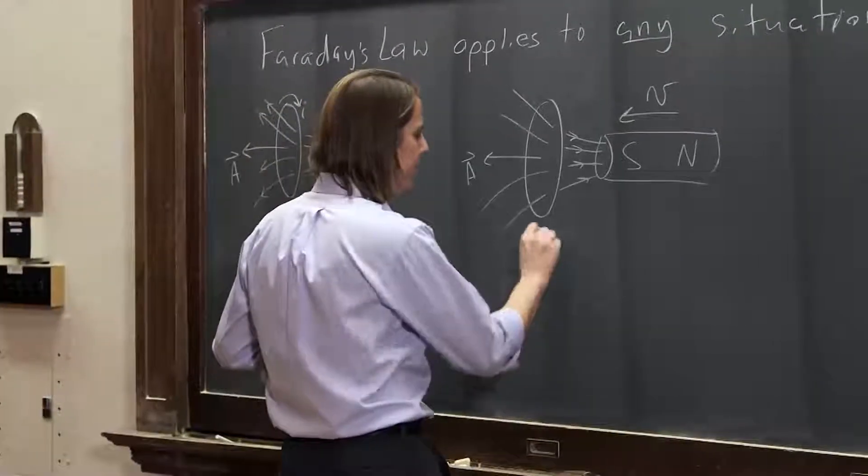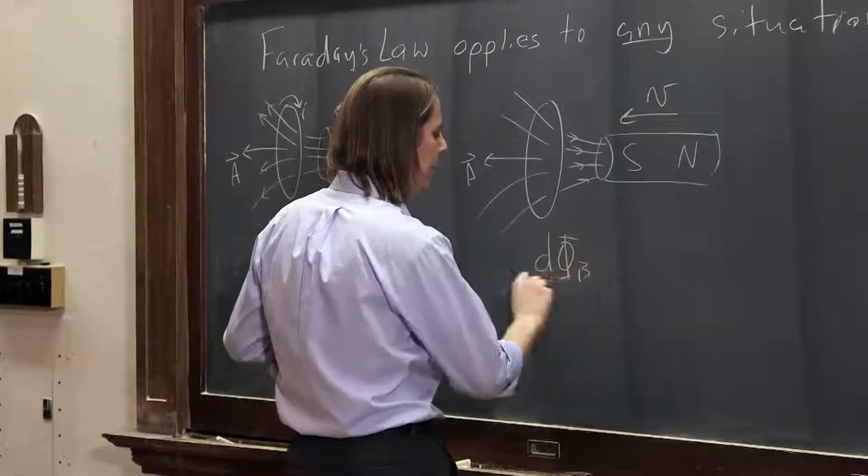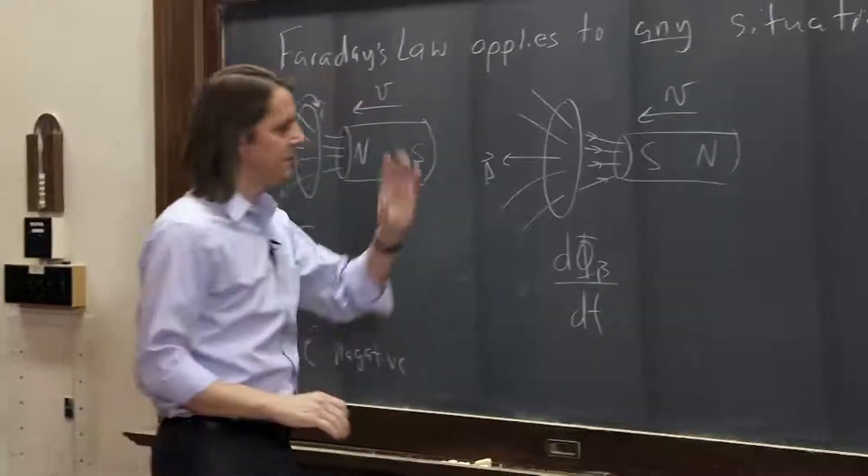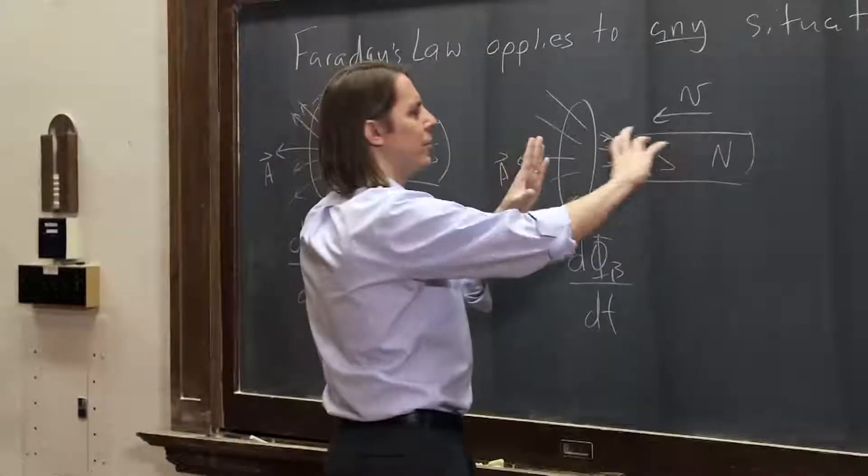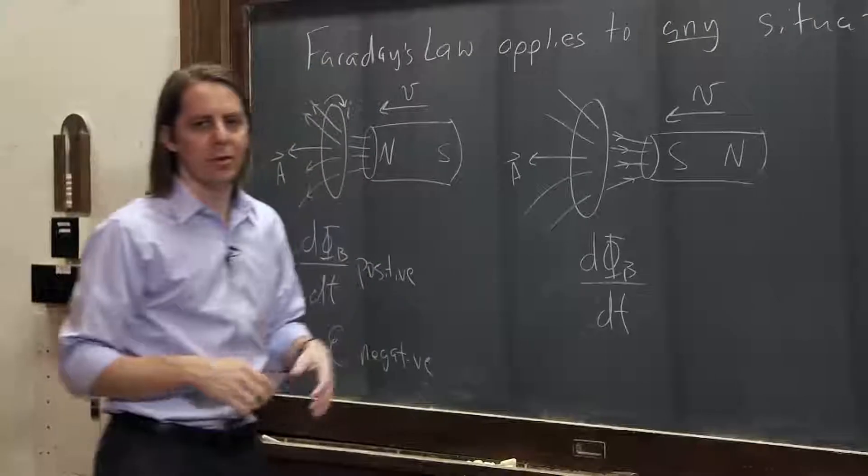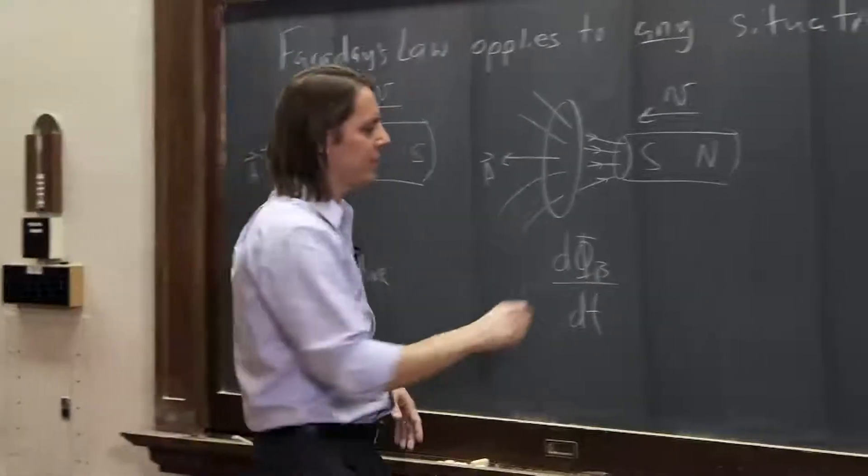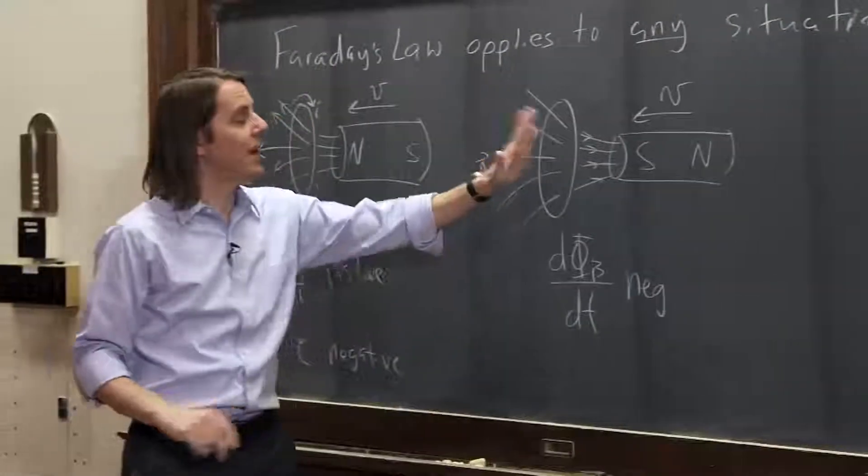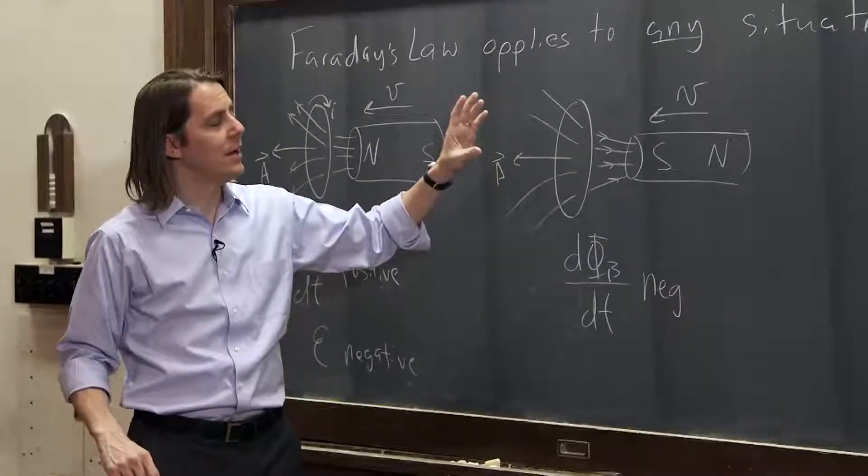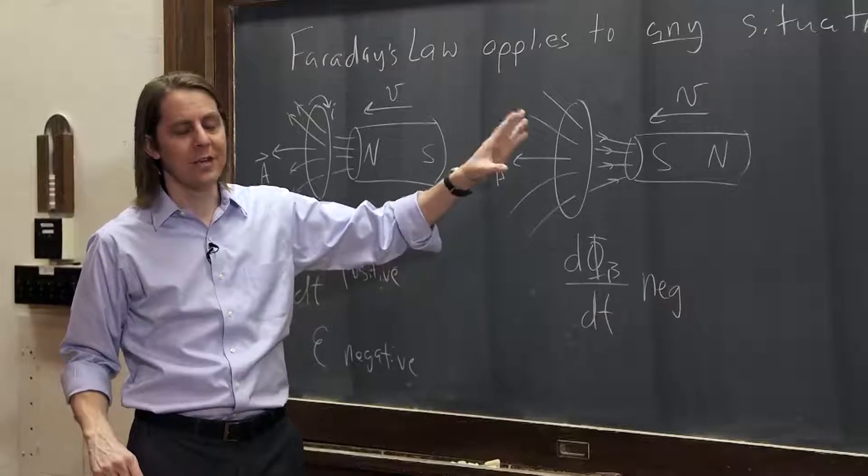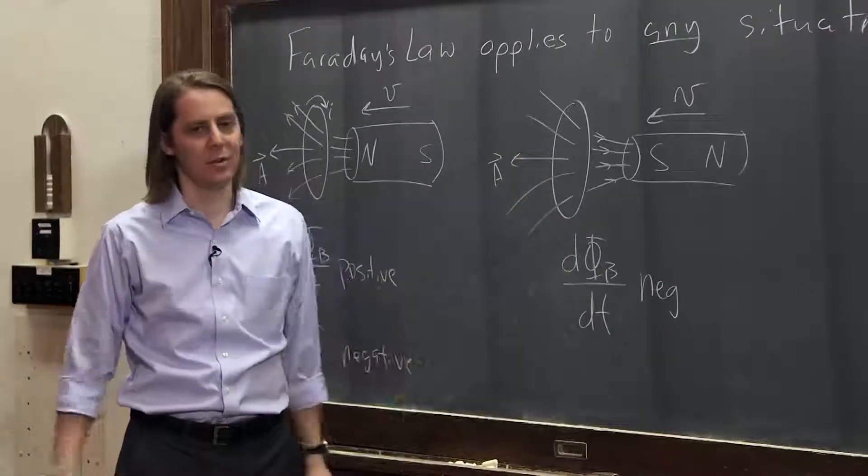So the flux itself, the value of the flux, is negative. But as we move this closer, you get a more and more negative value. The flux is going down, so the rate of change of the flux is negative. Not only is the value of the flux negative, but it's getting a larger and larger negative magnitude. That means its rate is also going negative.